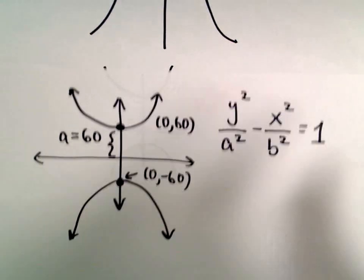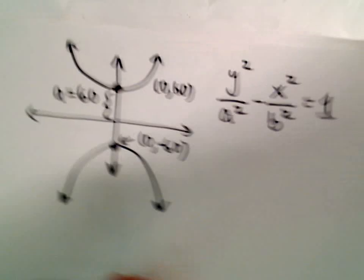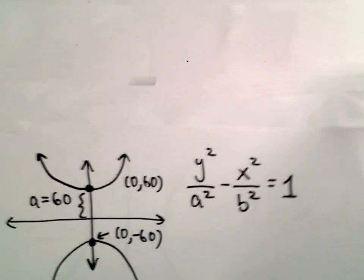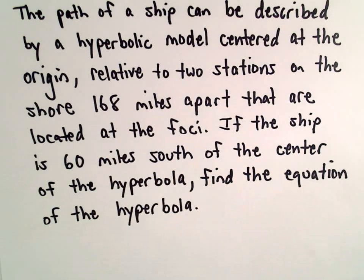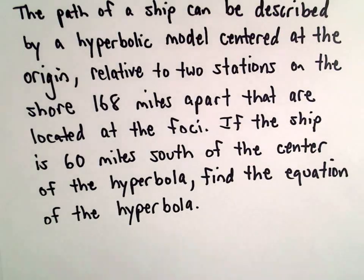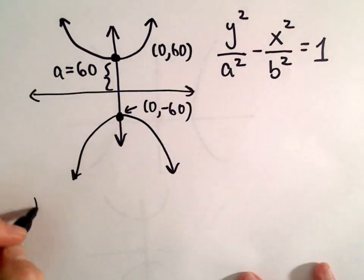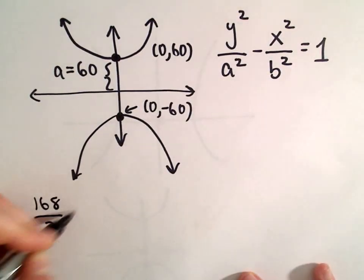Okay, so we're told the other bit of information too, that the foci were 168 miles apart. We're told that the foci are 168 miles apart. Well, if we take 168 and divide that by 2, we're going to get 84.